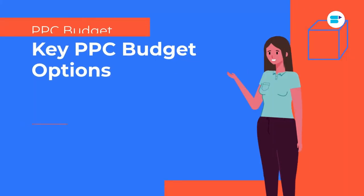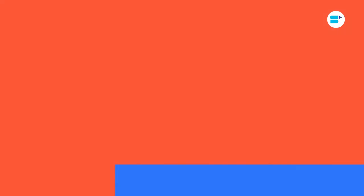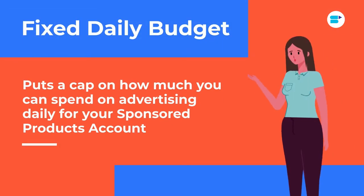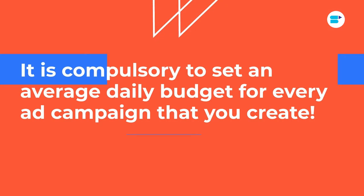There are two types. The first is fixed daily budget and the second is average daily budget. Fixed daily budget essentially puts a cap on how much you can spend on advertising daily for your sponsored product account. Average daily budget is the maximum daily budget you're willing to spend for each campaign, and it is compulsory to set an average daily budget for each ad campaign you create on Amazon. More details are in the PDF in the description box below.